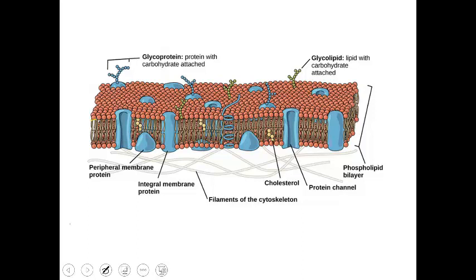In this ocean of phospholipid molecules, you sometimes see some glycoproteins. Glyco means carbohydrate, protein is protein. So glycoproteins are carbs and proteins together. Or you could have glycolipids, which is carbohydrates and lipids together. So you have the phospholipid bilayer, and scattered around in this bilayer you have glycoproteins and glycolipids.